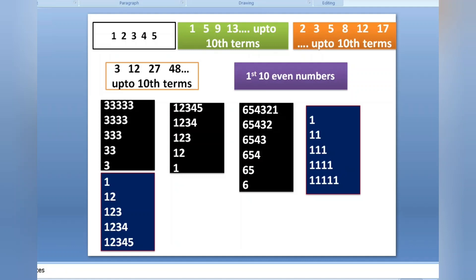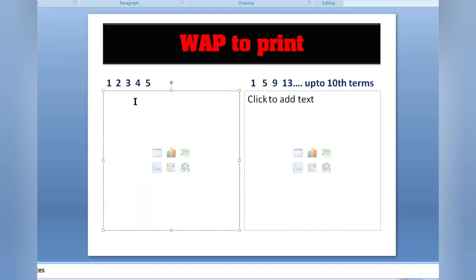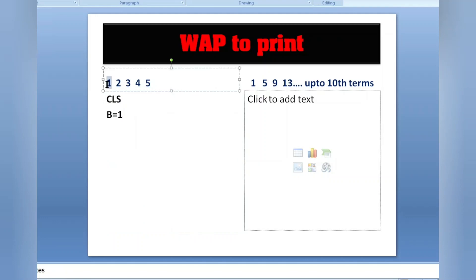Let's start with the first one: 1 2 3 4 5. Please watch till the end and I'm 100% sure you will get it clearly and be able to solve pattern printing programs in QBasic. First of all we write CLS, then b equals to 1. CLS clears the output screen and b equals to 1 sets the first value.